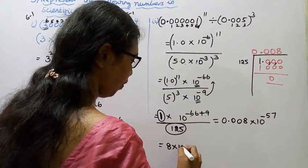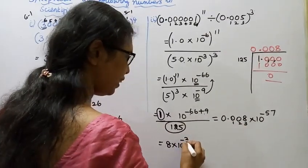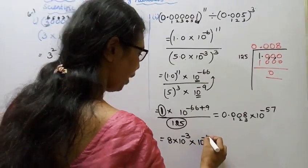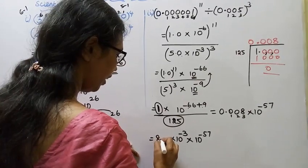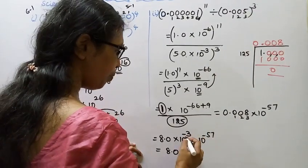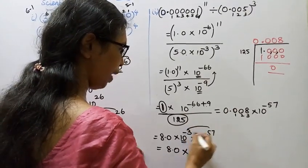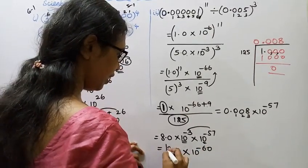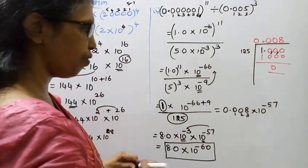0.008 equals 8 into 10 to the power of minus 3 — counting: 1, 2, 3 — so 10 to the power of minus 3. Now combining: 8.0 into 10 to the power of minus 3, into 10 to the power of minus 57. Both bases are the same, so add the exponents: minus 3 plus minus 57 gives minus 60. Final answer: 8.0 into 10 to the power of minus 60.